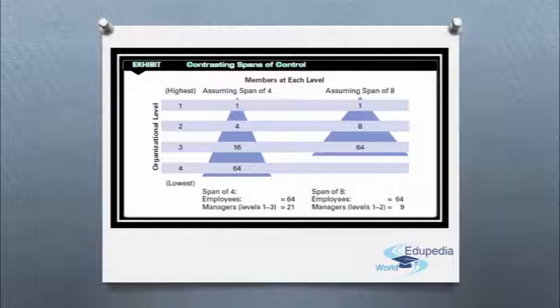If the average manager made $50,000 a year, the organization with the wider span would save more than $600,000 a year in management salaries alone. Obviously wider spans are more efficient in terms of the cost.